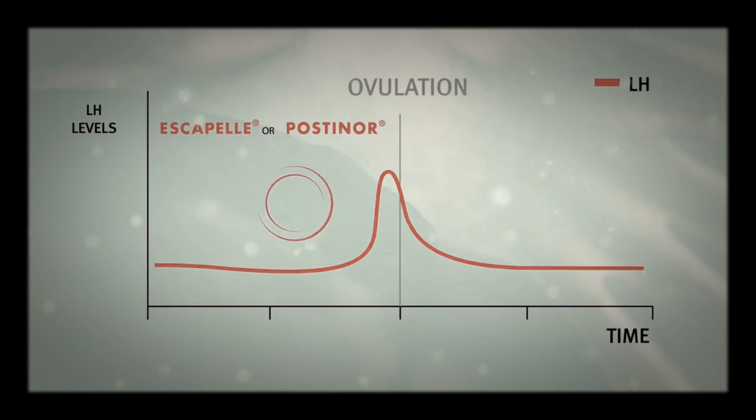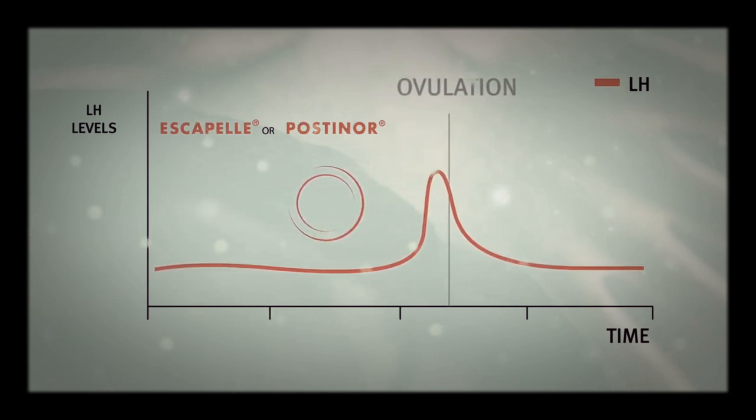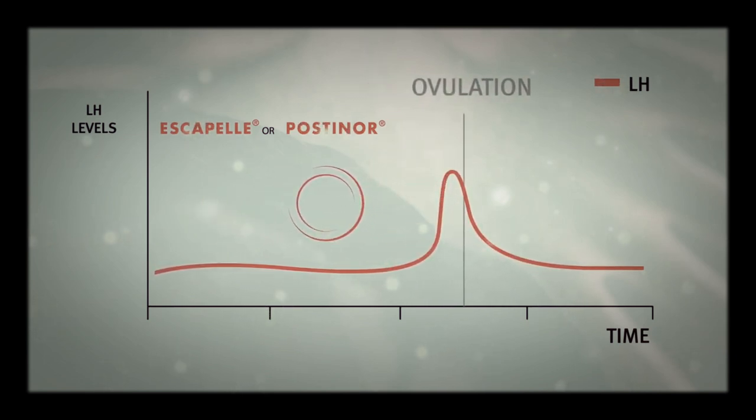Escapel or Postinor work the same way as regular contraceptive pills, but after sex. They delay or inhibit ovulation, so the egg cell does not leave the ovary.